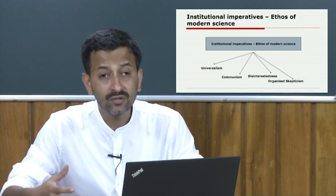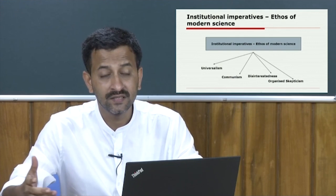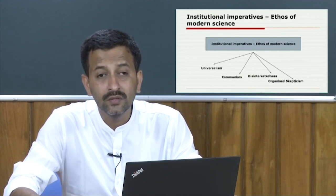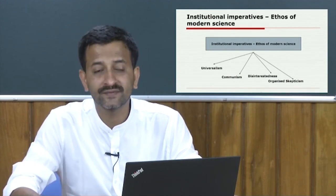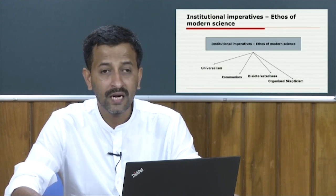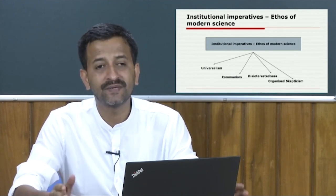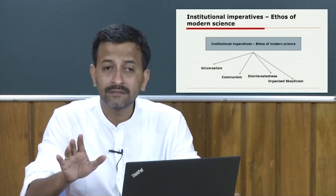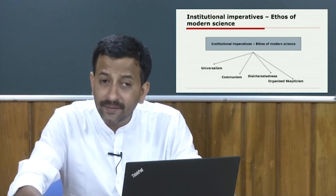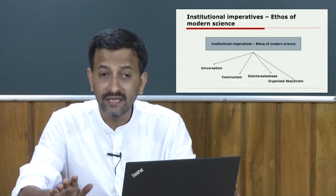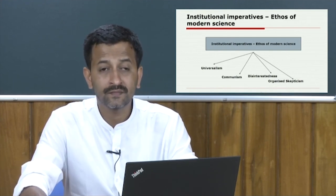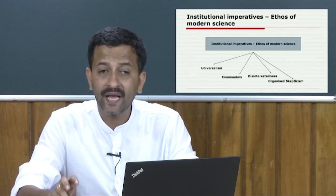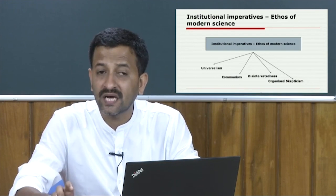The ethos of science as Merton visualized it is the affectively toned complex of values and norms which is held to be binding on the man of science. These norms are expressed in terms of prescriptions, proscriptions — norms which are legally bound — preferences, which come under the scope and ambit of motivational values and norms, and ideals.